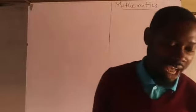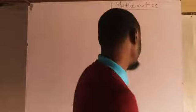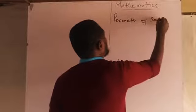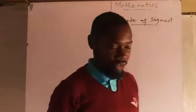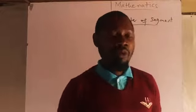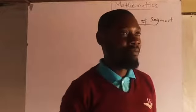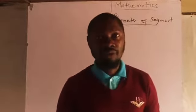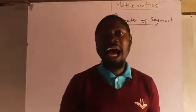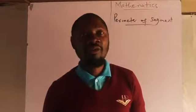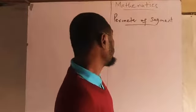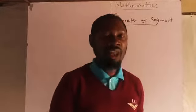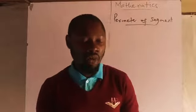Great scholars, let us consider the perimeter of a segment. The perimeter of a segment is simply the length of the arc plus the length of a chord. The length of the arc plus the length of a chord is what makes up the perimeter of a segment, so you have to add the length of the arc to the length of the chord.